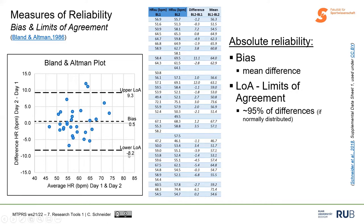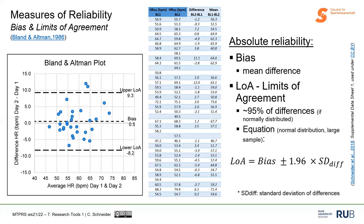The limits of agreement ranged from -8 to +9 bpm, meaning anything in that range is plausible based on observed data. Limits of agreement approximately include 95% of the differences, assuming normally distributed data. The calculation is: bias ± (2 × standard deviation of the differences). This approximately equals 95% of observed or expected differences with a large sample and normally distributed data.